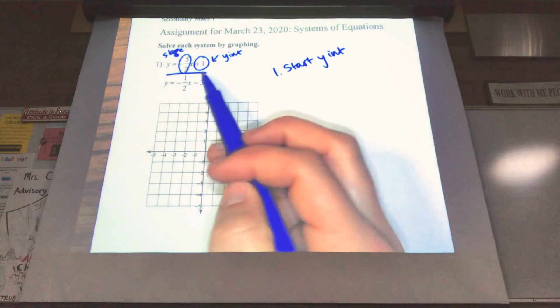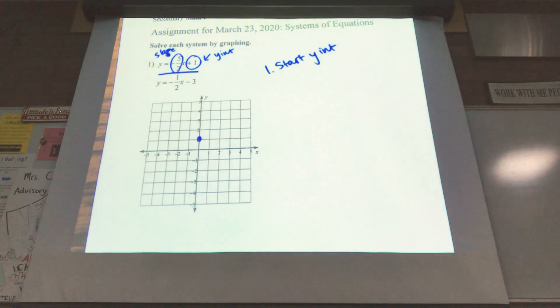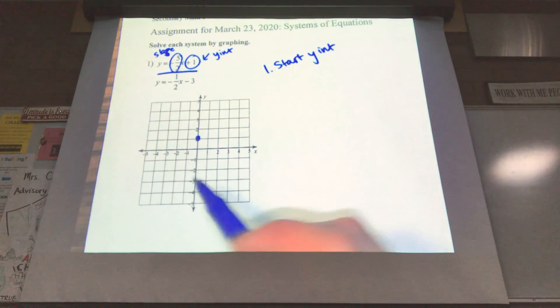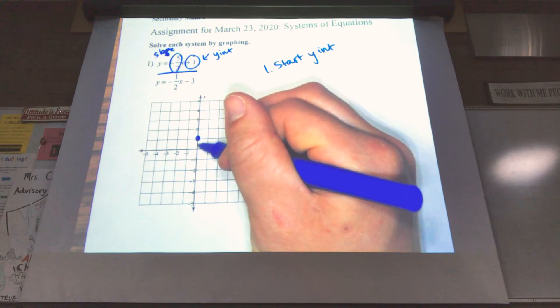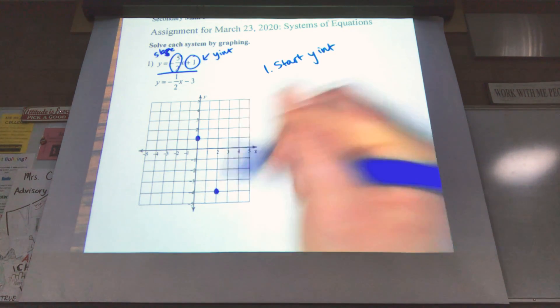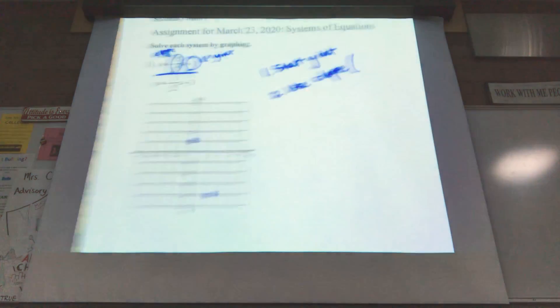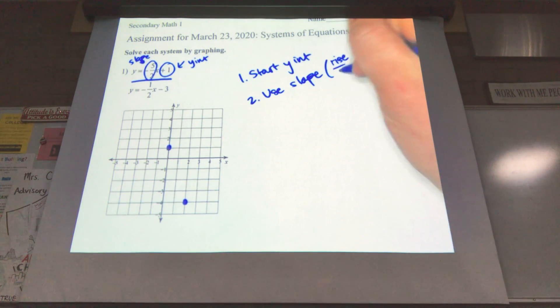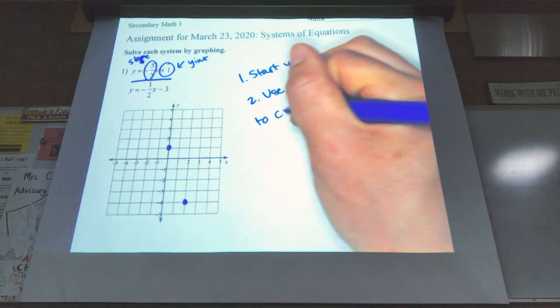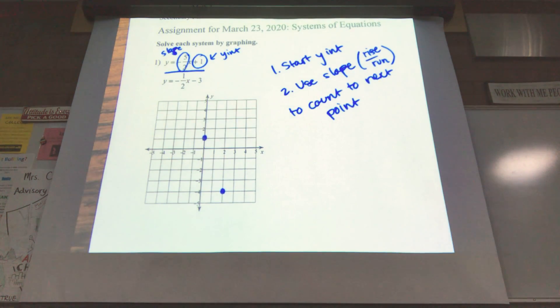So my y-intercept for my blue equation is at positive 1. So my first point is at positive 1 for this equation. Now I'm going to use my slope, negative 5 over 2, to count to my next point. So negative, I'm going to go down 5, 1, 2, 3, 4, 5, and over 2. 1, 2. Remember slope. Use slope. And I'll put in parentheses. Remember, rise over run to count to your next point. So I found the two points. I can go ahead and connect these.